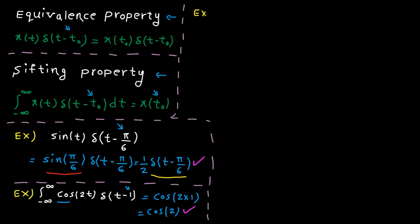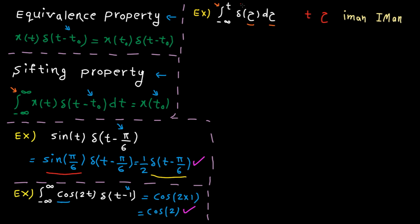Next example: the integral from minus infinity to t of delta(τ) dτ. Please note the upper bound ends at t, not infinity. Also, the integral variable is tau, not t — but don't be scared, this is super easy. It doesn't really matter if the variable is called t or tau. You can call me Iman or Iman — my identity is the same. So the integral variable is just a name.